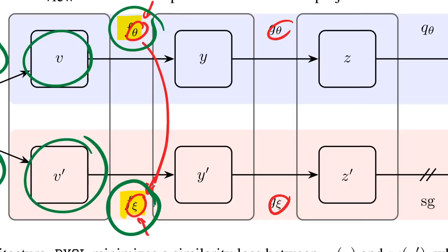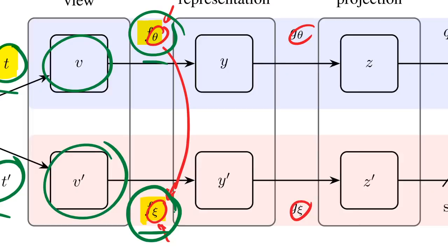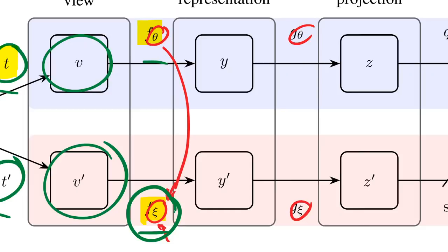That idea of a stable target comes from the momentum contrast principle: you need a stable representation as a target. We know that if the target is a stable version of the past online parameters rather than the same parameters, it tends to work well. It's analogous to having two different versions of the same image, but now two different versions of the same neural network. This principle goes back to early DQN networks, which had a learned network and a separate target network copied over periodically.